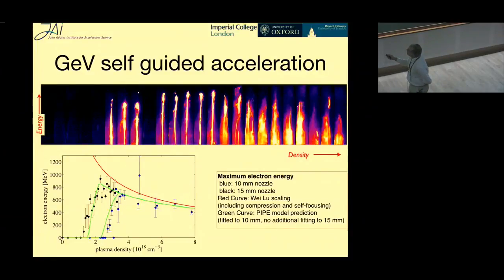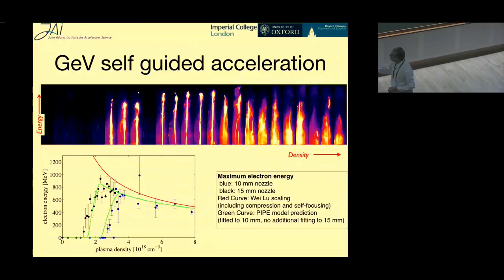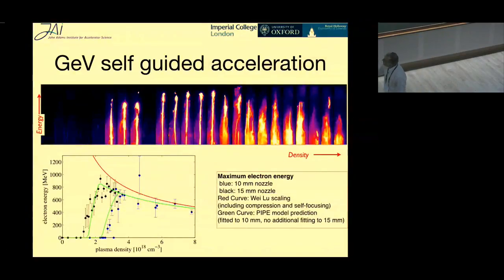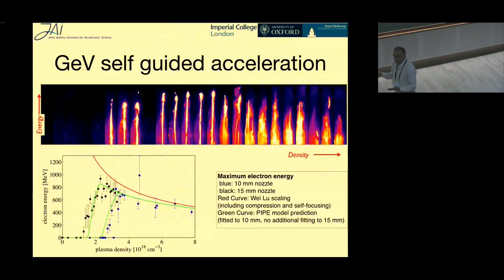At higher densities the beams tend to get worse, because as Dino was talking about, electrons sitting on the front of the pulse start to get wiggled and thrown about, and their maximum energy goes down. There's a 1/n scaling that many people have talked about — the maximum energy that they can be accelerated to pretty much follows 1/n. The problem is that for a 1/n scaling you'd think you could just keep going to lower density and get higher and higher energy, but the injection stops pretty abruptly regardless of interaction length. For these parameters, we typically get to about 1 GeV maximum energy gain, and that was about it.